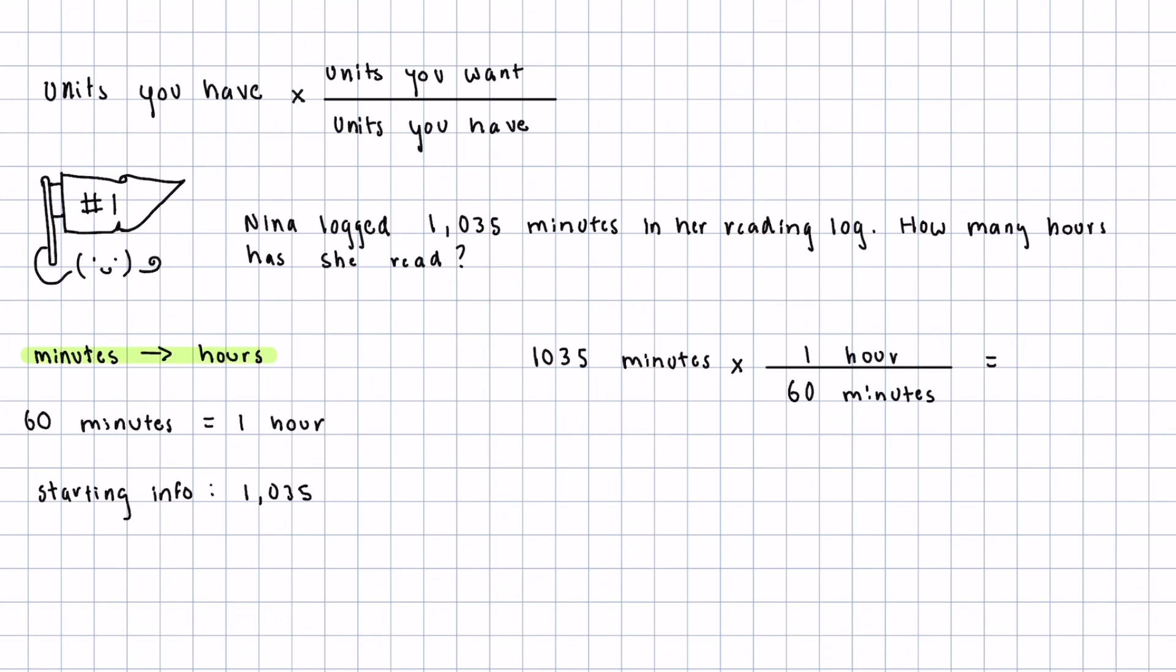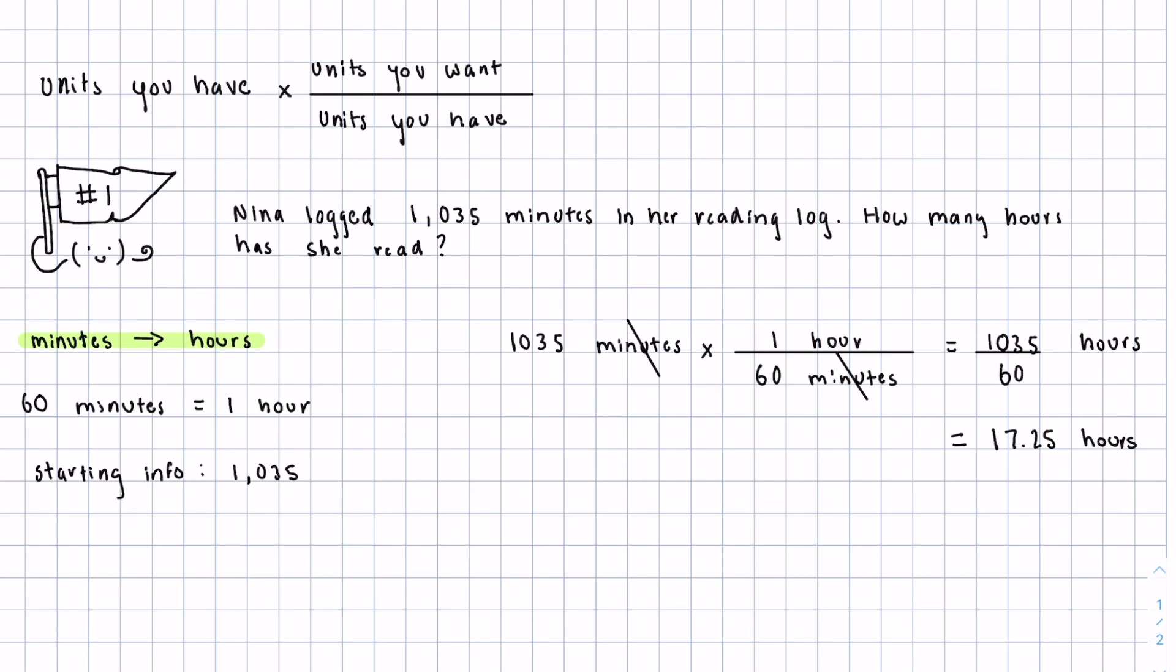This is what it looks like when we plug everything in. So all that's left for us to do is just multiply and simplify. And when doing unit conversion problems, it's highly encouraged that you cancel out the units as you go. So at the end, we're left with 1,035 over 60 hours. And if you just divide that, you're going to be left with 17.25 hours.